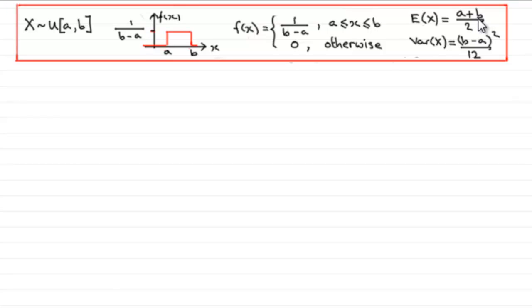But if we want a formal proof, then one way we can do it is by using the general formula for working out the mean of a continuous random variable.